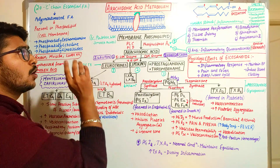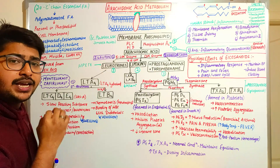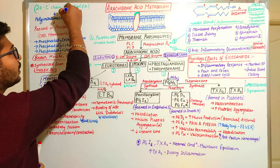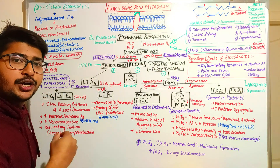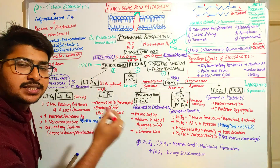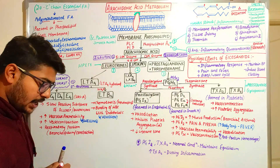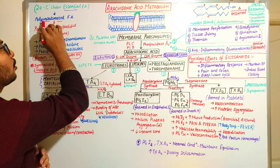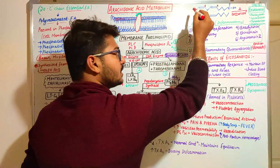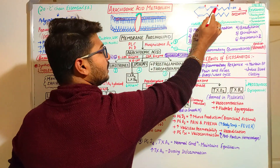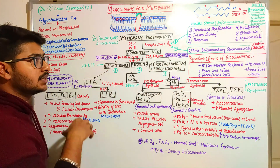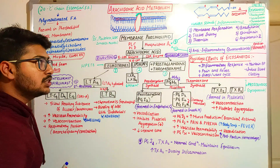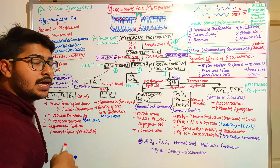The first question: what is arachidonic acid? Arachidonic acid is a 20-carbon chain essential fatty acid — it is a polyunsaturated fatty acid. It is called essential because it is not produced in our body but required from the external environment. It is called polyunsaturated because it has multiple double bonds in its chemical structure.